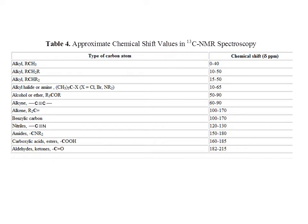Here is Table 4 in Chapter 11 of the textbook. It provides approximate chemical shift values in carbon-13 NMR spectroscopy — there is a link to Table 4, Chapter 11, in the video description. The type of carbon atoms in the first column represent carbons in different functional groups, shown in bold, and their corresponding chemical shifts are in parts per million in the adjacent column.